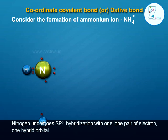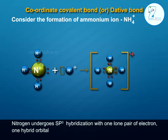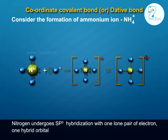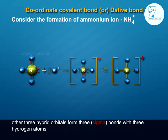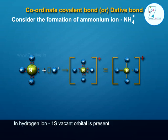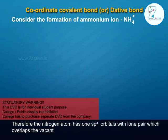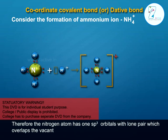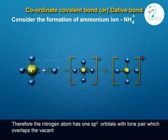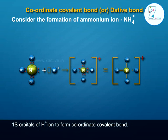Nitrogen undergoes sp3 hybridization, with one lone pair of electrons and three hybrid orbitals forming three sigma bonds with three hydrogen atoms. In the hydrogen ion H+, one vacant 1s orbital is present. Therefore, the nitrogen atom uses one sp3 orbital with its lone pair, which overlaps the vacant 1s orbital of H+ to form a coordinate covalent bond.